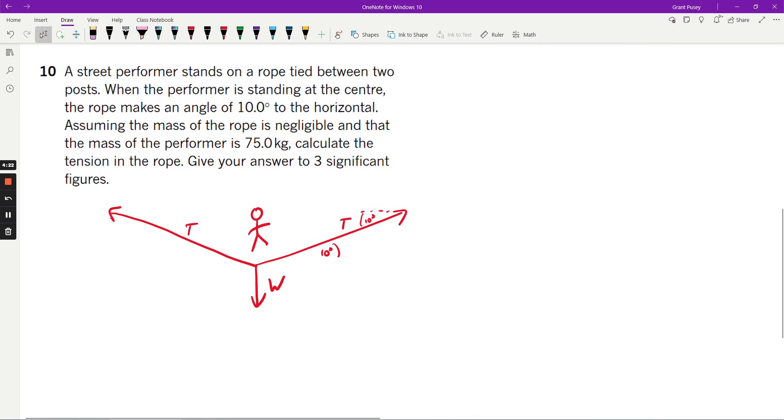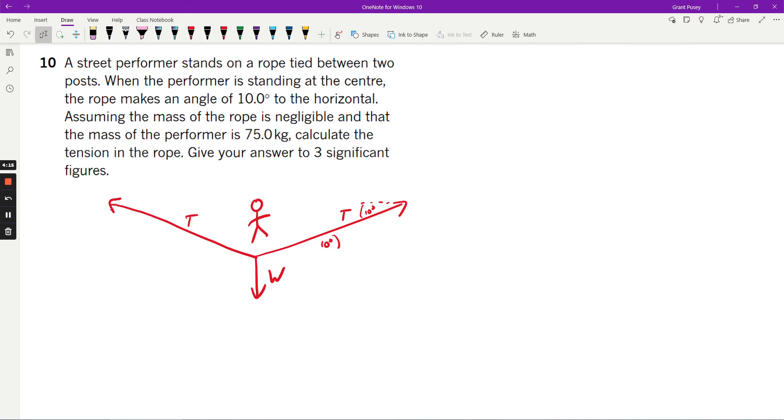So in this scenario, a lot of students become a little bit unstuck because they think that there's only one tensional force acting, but because the rope has been essentially divided into two, you've got two tensional forces acting in opposite directions to each other.